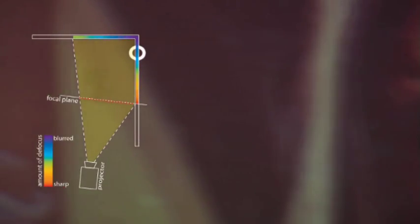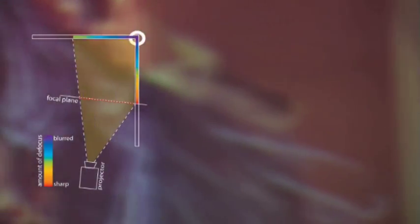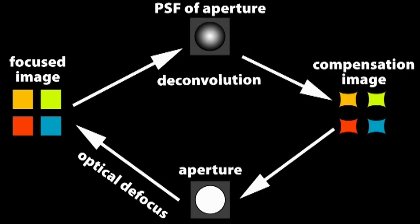Several approaches have been proposed to increase projected depth of field by convolving projected images with the inverse blur function. A deconvolution can be performed in the frequency domain, and it is equivalent to a division of the Fourier-transformed image and blur function.